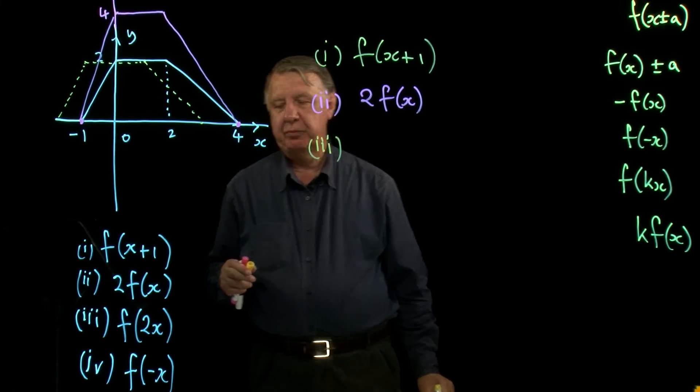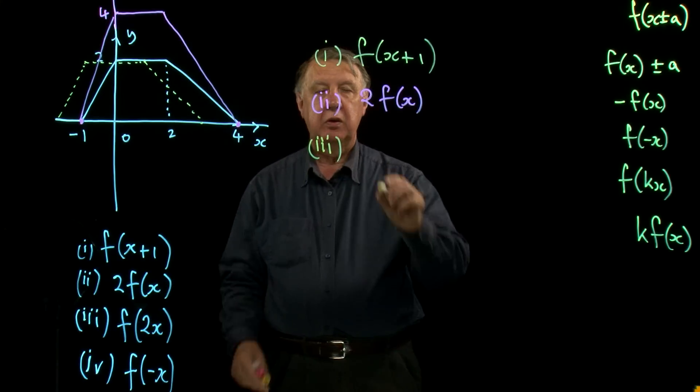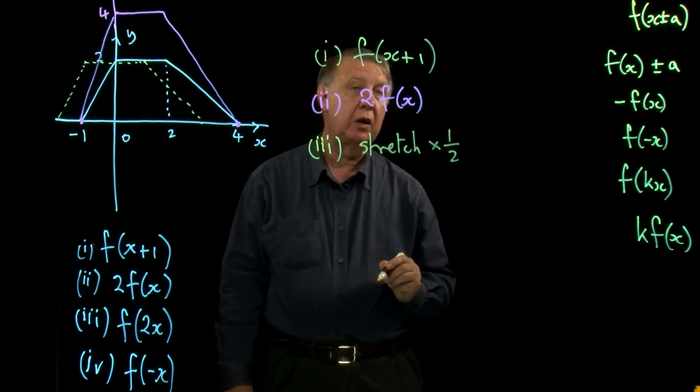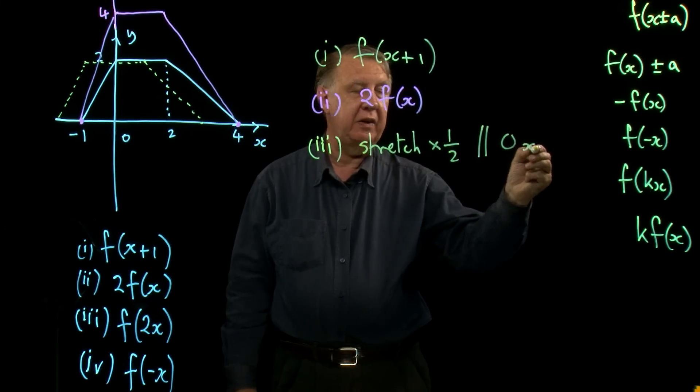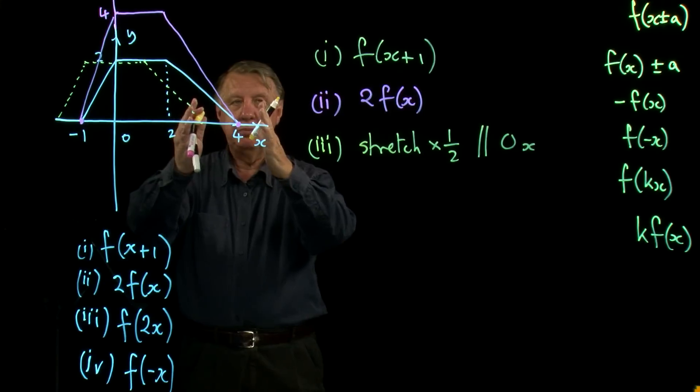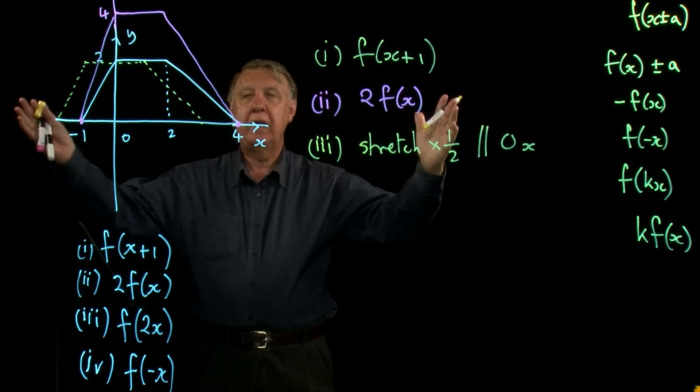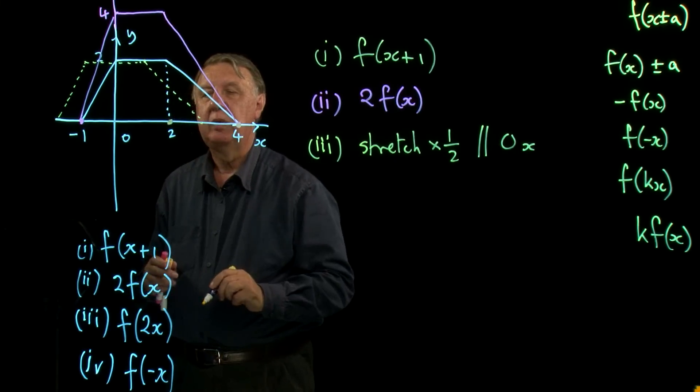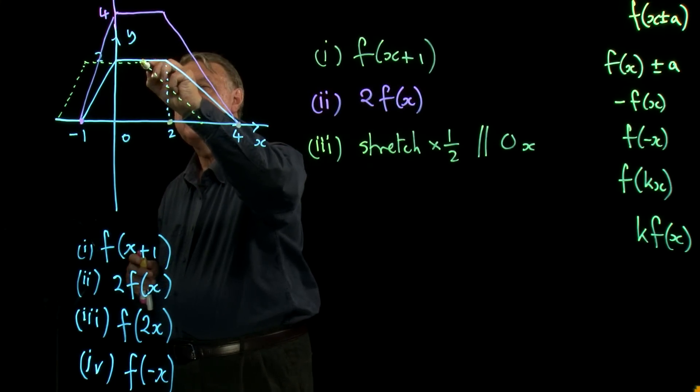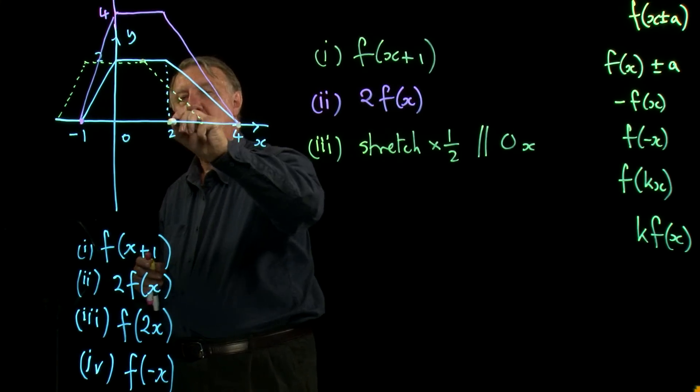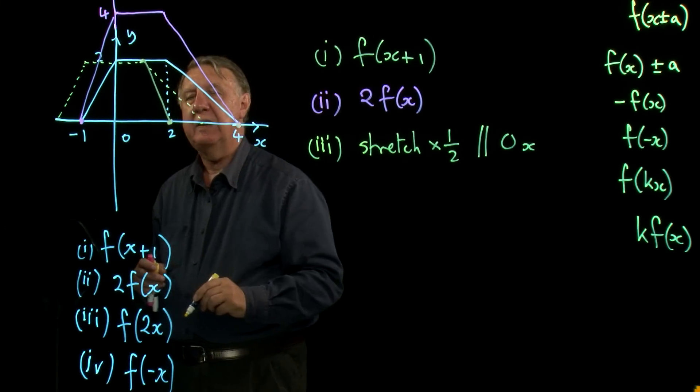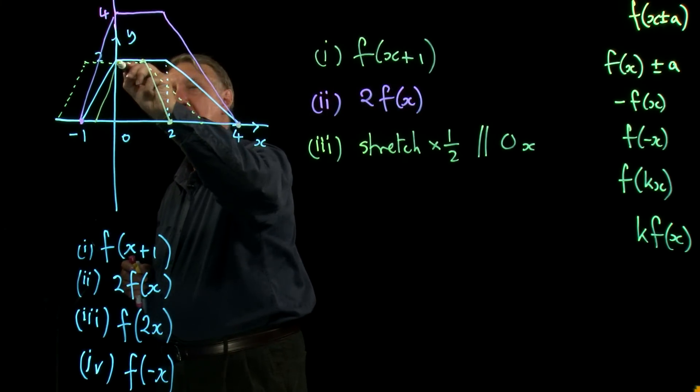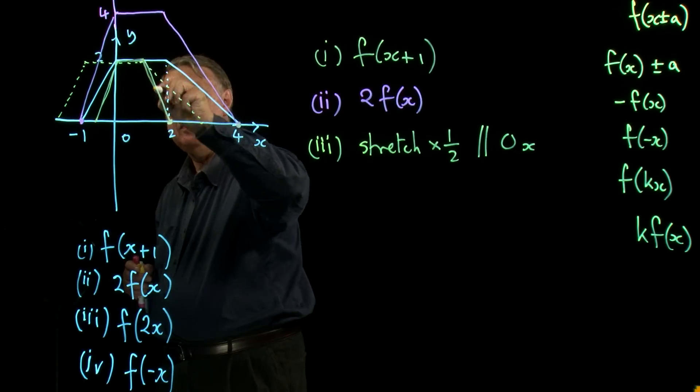Now this one, remember, this is the tricky one. This is a stretch by one over k. So a stretch by a factor of a half parallel to the x-axis. So everything comes in. Nothing happens in the y direction. Everything comes in. So this point here comes in to there, this point goes to there. So that line goes like that. This point comes to here, and so the final graph is like that.